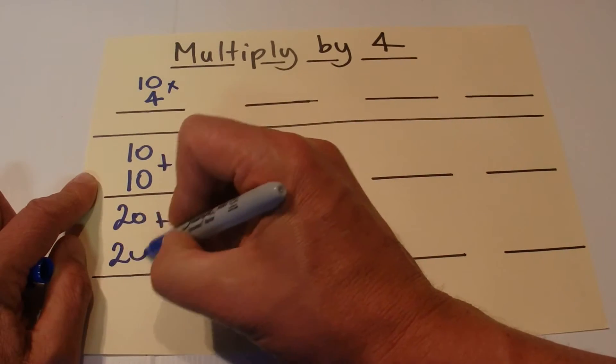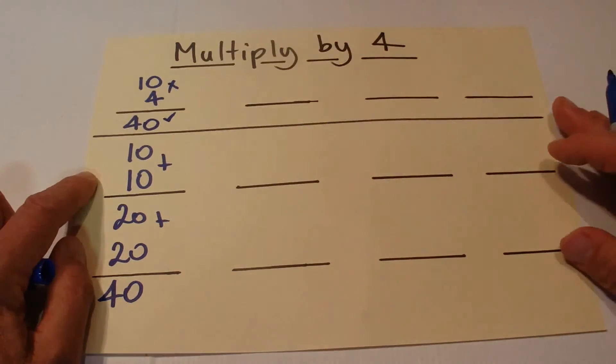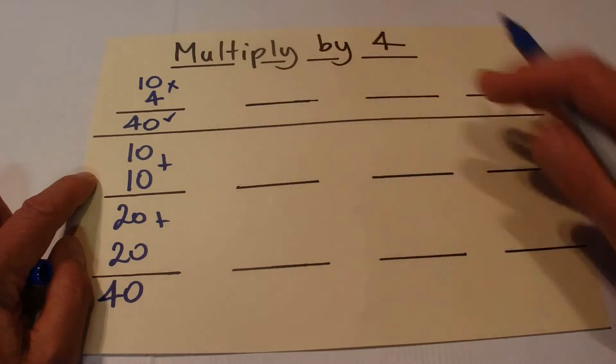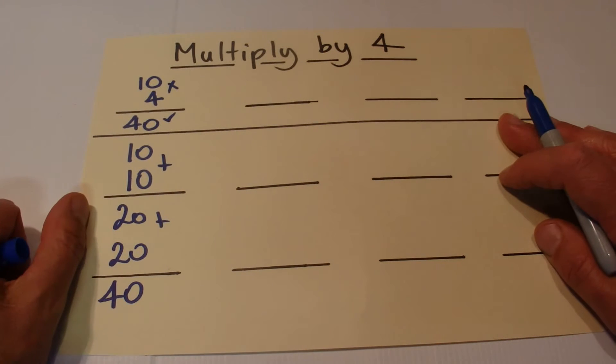So if we do 10 plus 10 is 20, and then we double that again, 20 plus 20 equals 40. There we go, the answer is 40 for 10 times 4.